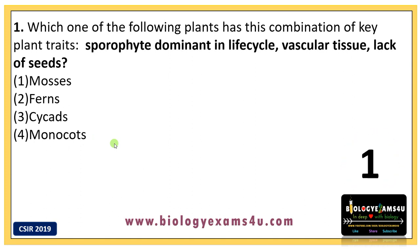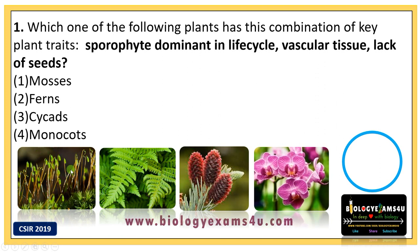So this is the moss, this is the fern, this is the cycad, and this is a monocot. This is a bryophyte, this is a pteridophyte, this is a gymnosperm, and this orchid is an angiosperm. Bryophyte doesn't have a dominant sporophyte life cycle, so it's not the answer. Pteridophytes have a dominant sporophyte life cycle. All groups from pteridophytes onward have vascular tissue — xylem and phloem. Gymnosperm and angiosperm both have seeds, so the answer is pteridophyte — that is, ferns.